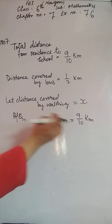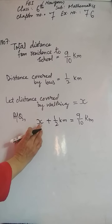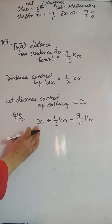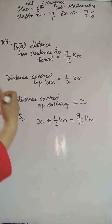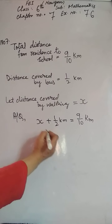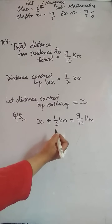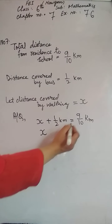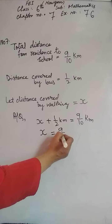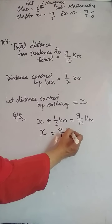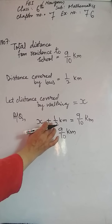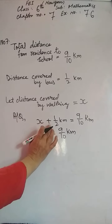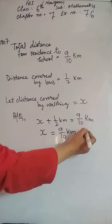Yeh question is tarah se hai: total distance itni hai, itni distance woh paidhl chalti hai, aur itni distance woh cover karti hai bus mein. Ab hamein batana hai kitni distance woh paidhl chalti hai. Toh hum x ki value nikalenge. X ko left side mein rakhenge aur 9/10 ko right side mein dalenge. 1/2 distance by bus ko left side se uthaakar right side mein dalenge — yahan plus hai toh yeh ban jaega minus.